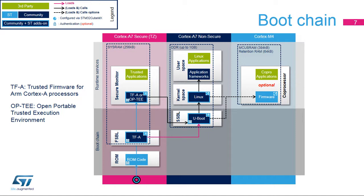The trusted boot chain is the default solution delivered by STMicroelectronics with a complete feature set. The Cortex-M4 firmware can be loaded and started by the Linux OS or by the secondary bootloader, for instance uBoot. In normal mode, the firmware is stored in the file system and is loaded by the Linux userland through the remote PROC file system interface. In early boot mode, the firmware is installed in the boot.fs partition and is loaded by uBoot before the Linux firmware starts.